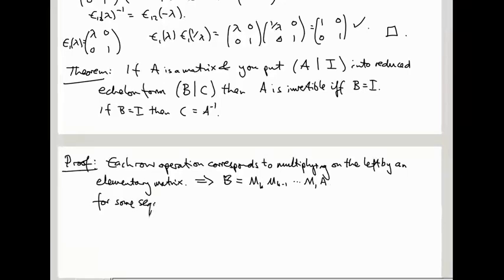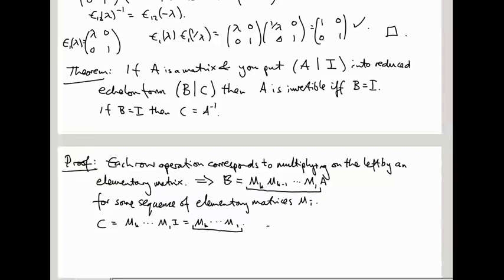So B has this form for some sequence of elementary matrices. M_I. Now, we're simultaneously performing the same row operations on both sides of this bar, so that tells us C is also M_K down to M_1 times the identity. So C is actually just a product of elementary matrices. And comparing this expression here, M_K up to M_1, with this expression here, we see that B equals C A. Right? This expression B equals M_K up to M_1 A, that M_K up to M_1 is just called C. Right? That's what this expression is saying.